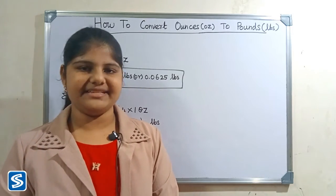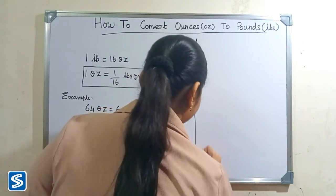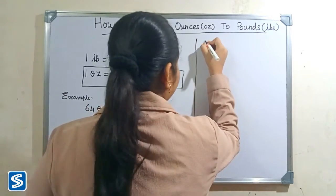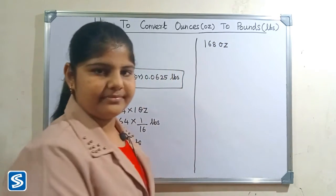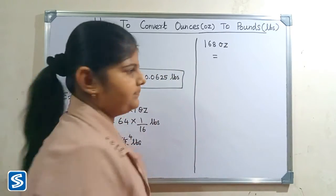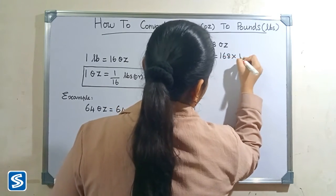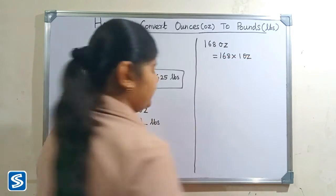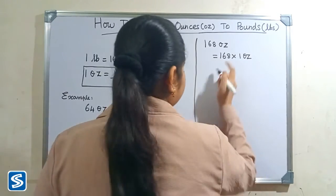Next, we will take another example. 168 ounces. 168 ounces can be written as 168 × 1 ounce. Now we have to substitute 1/16 pounds in the place of 1 ounce.